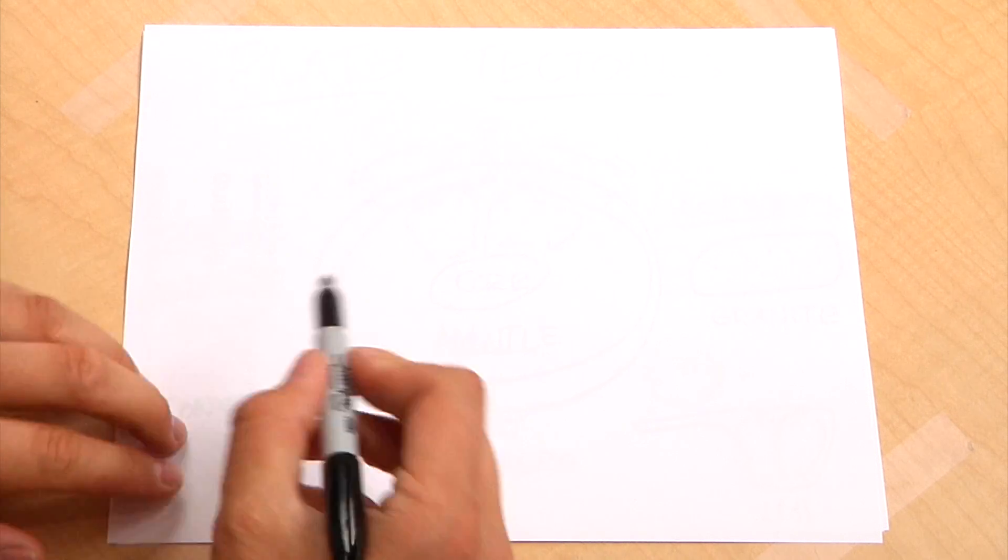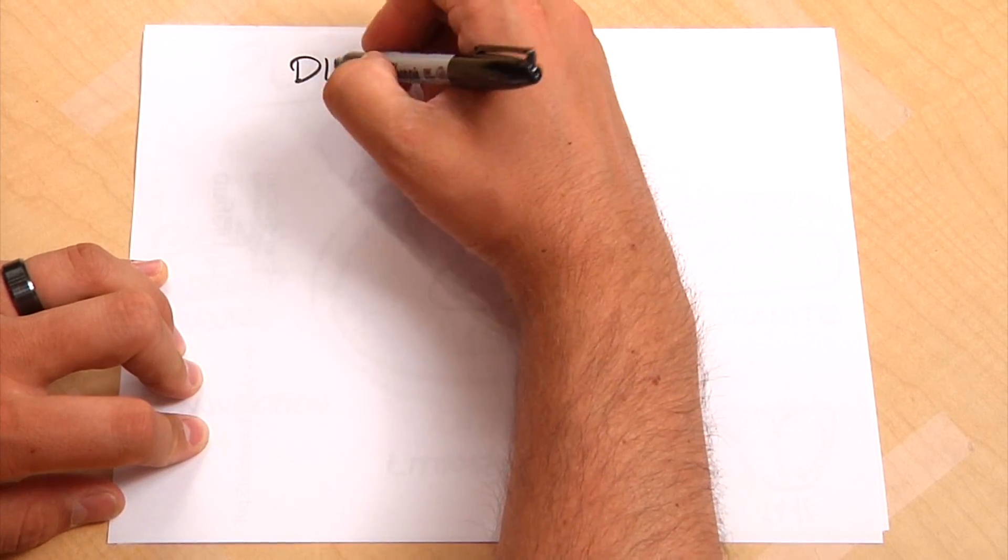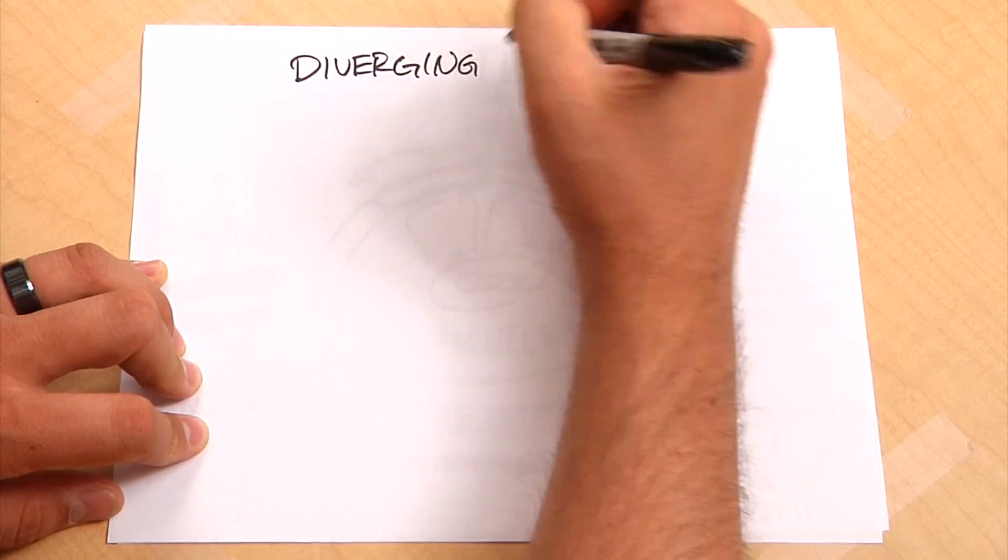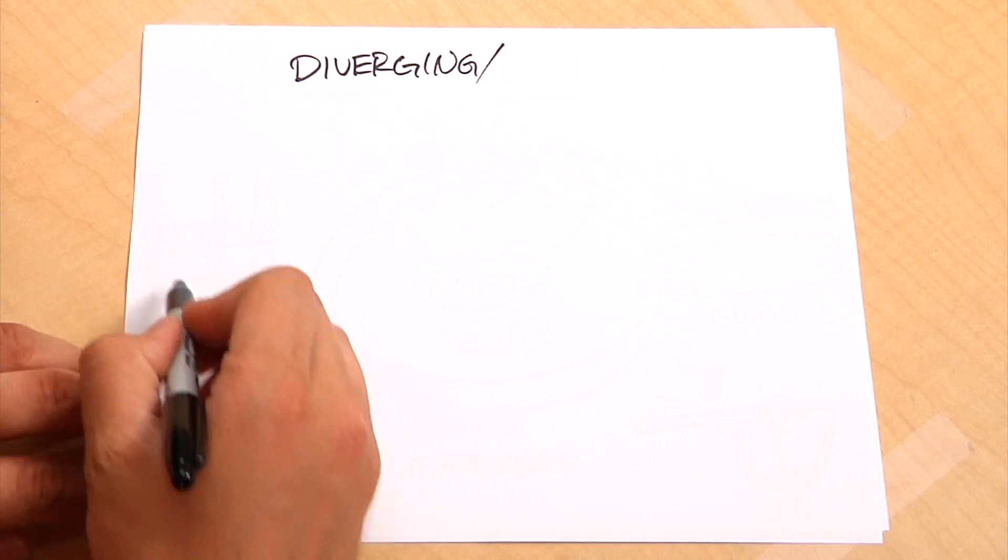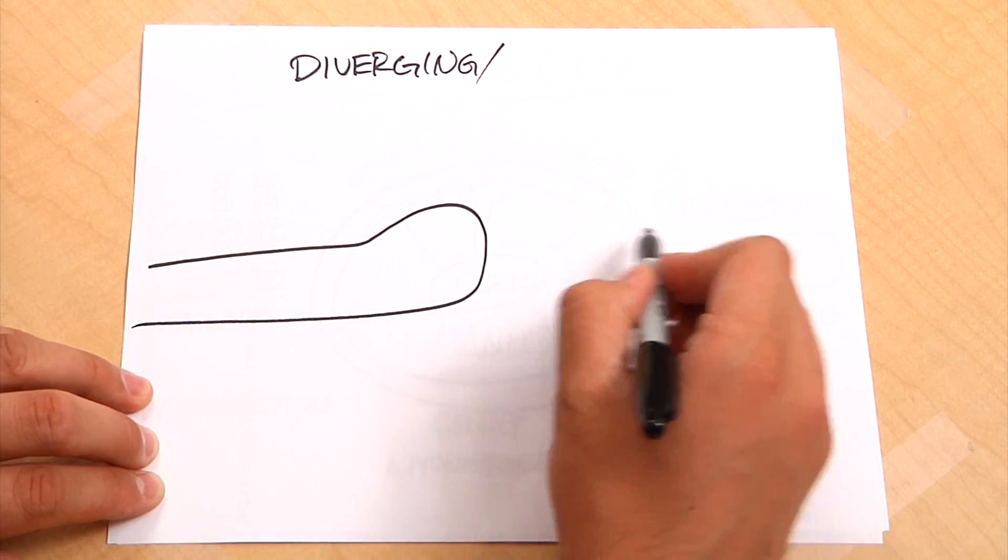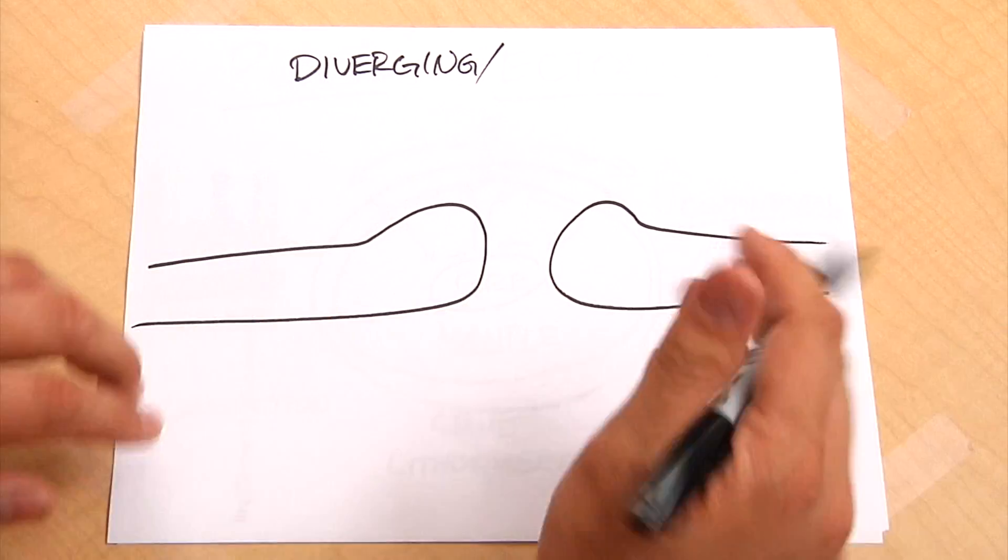So there are three kinds of boundaries where plates meet and interact. And this is where the real tectonics come in. The first part, I'll write it up here, is we're going to talk about a diverging boundary. And this is where two plates, we're just going to say these are two oceanic plates, come, make them move apart.